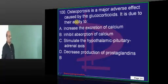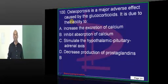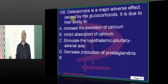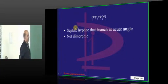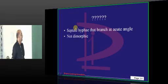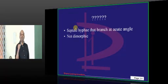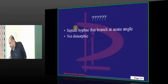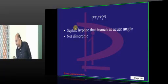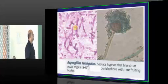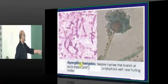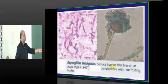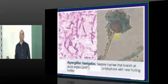Coming to osteoporosis — how do glucocorticoids lead to osteoporosis? It is through decreased absorption of calcium, which is the underlying mechanism. Now, septate hyphae that branch at an acute angle and are not dimorphic — which fungi? Aspergillus. Aspergillus fumigatus: you have acute angle branching less than 45 degrees, septate hyphae, and the conidiophore with fruiting bodies — another important feature of Aspergillus.